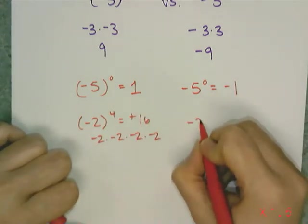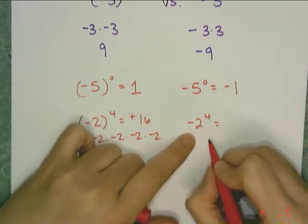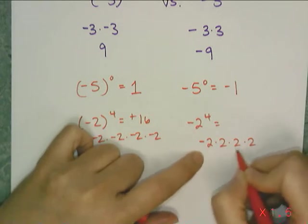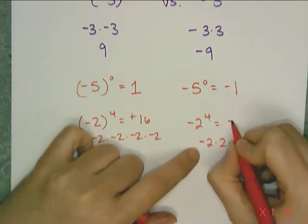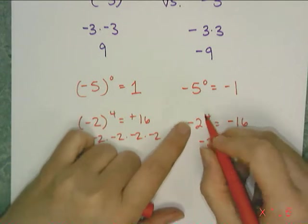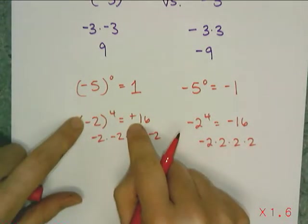But if I write it like this, I'm asking for the opposite of two to the fourth. So expanded, I only expand that two, and I end up with negative 16. If I want to include the negative in the expansion, I got to group it together with parentheses.